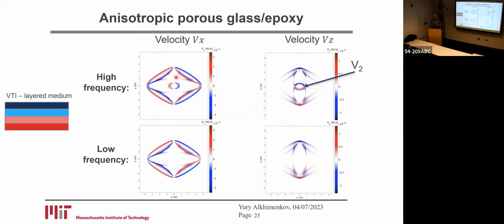There are some complex wave patterns that can be seen. If the frequency is low, the slow wave is attenuated and we cannot see it anymore.